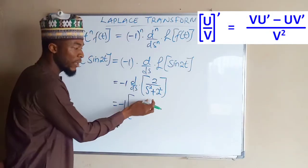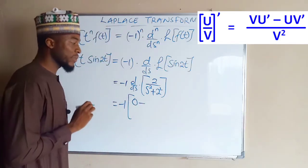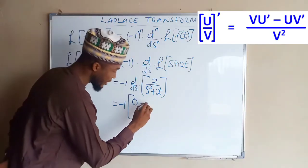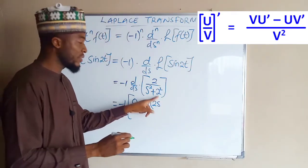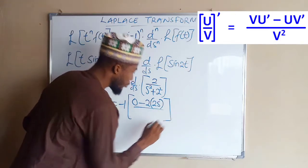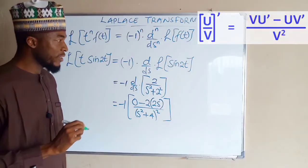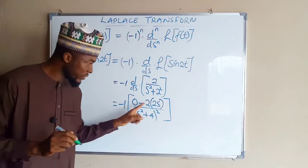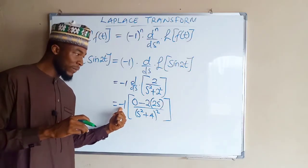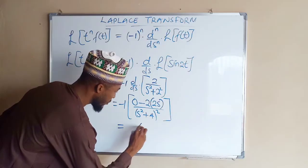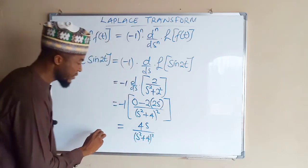Next we take the derivative of this function using the quotient rule. This equals negative 1 times: the bottom times the derivative of the top — since the top is constant its derivative is 0 — minus the top times the derivative of the bottom. The top is 2 and the derivative of the bottom is 2s, since the constant term vanishes. Dividing by the bottom squared gives s squared plus 4, all squared.